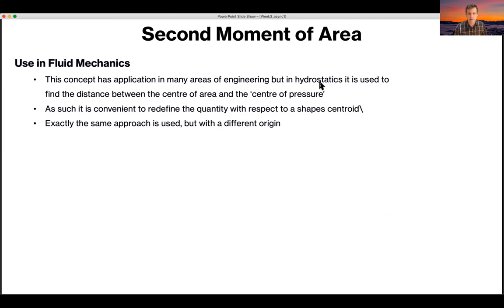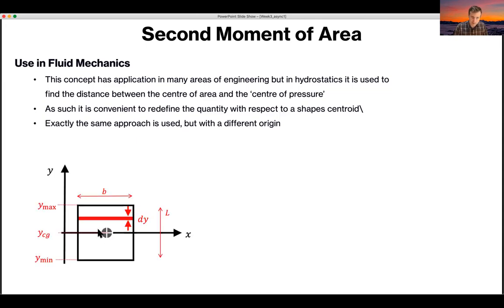So in hydrostatics, it's used to find the distance between the center of area and the center of pressure. So it's convenient to redefine the quantity with respect to the center of its gravity or its centroid. So in the last slide, you saw that we calculated the second moment of area with respect to the base, and this x axis passed through the base of the shape. Now we're going to do the same thing, but it's passing through the center of the shape, because in fluid mechanics, this is often what we do.